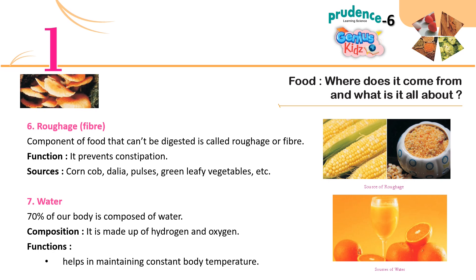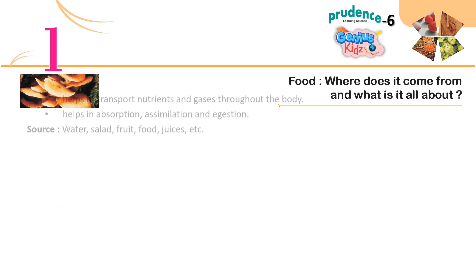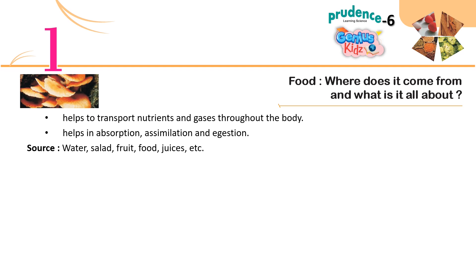6. Roughage/Fiber: The component of food that cannot be digested is called roughage or fiber. Function: It prevents constipation. Sources: Corn, dahlia, pulses, green leafy vegetables, etc. 7. Water: 70% of our body is composed of water. Composition: It is made up of hydrogen and oxygen. Functions: It helps in maintaining constant body temperature, helps to transport nutrients and gases throughout the body, and helps in absorption, assimilation and digestion. Sources: Water, salad, fruit, food, juices, etc.